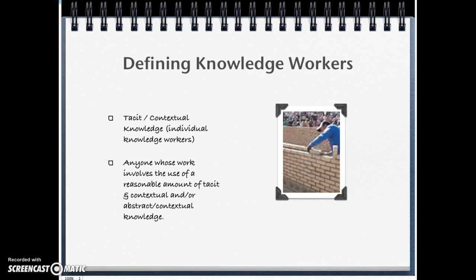The other type the book discusses is the tacit or contextual knowledge worker. These are workers whose work involves a reasonable amount of tacit, contextual, and/or abstract knowledge. For example, a bricklayer — there are books on it, but really learning to lay brick is tacit knowledge. You have to get out and do it, learning how to keep a wall linear through hands-on practice.